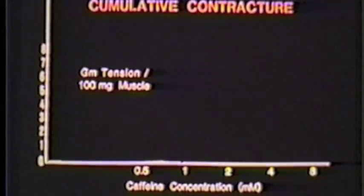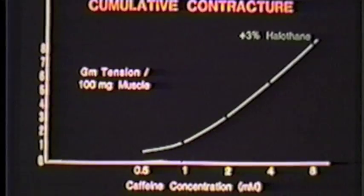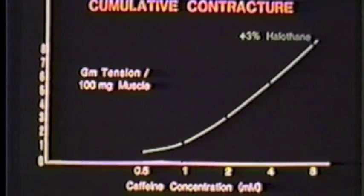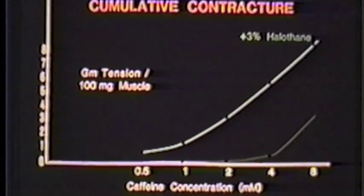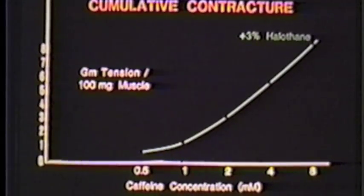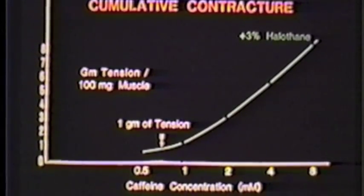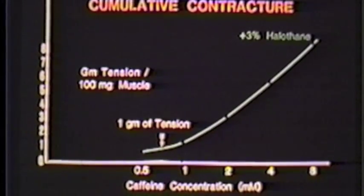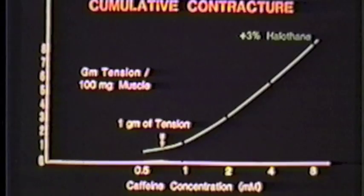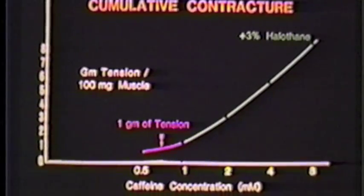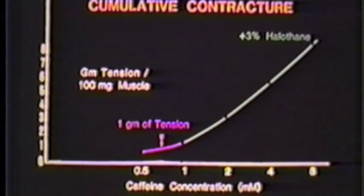This procedure measured the sensitivity of the muscle to caffeine and halothane. Separately, the muscle sensitivity to caffeine alone is also measured. The contracture tension is then graphed against the caffeine concentration. The concentration of caffeine required to produce one gram of tension is noted. If this concentration is less than 1 millimolar, the muscle is considered to be positive with respect to malignant hyperthermia.